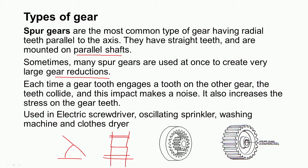Each time a gear tooth engages a tooth on the other gear, there is a collision between the mating teeth, which makes a noise and increases stress on the gear teeth. Spur gears are normally used in electric screwdrivers, oscillating sprinklers, washing machines, and clothes dryers.